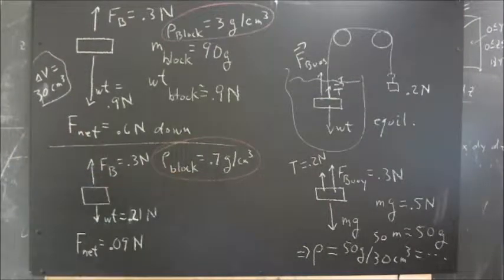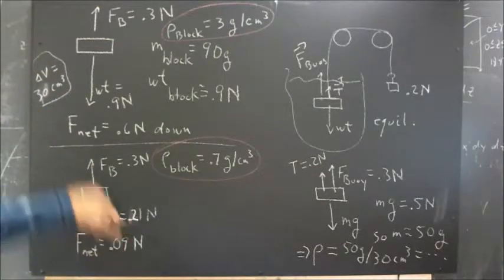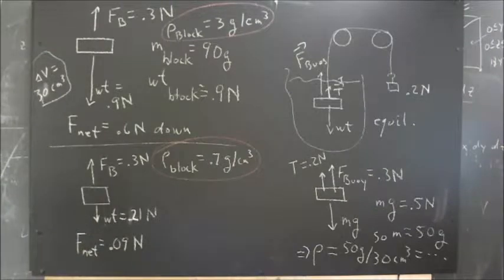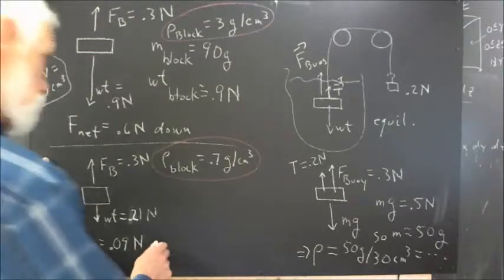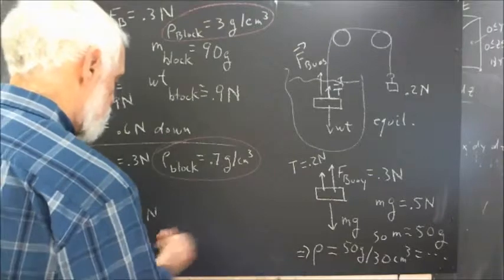Now, if the density is 0.7 grams per cubic centimeter, then the diagram looks like this. You've got 0.3 newtons up. You can verify that it's 0.21 newtons down. And net force is 0.09 newtons, and I didn't write downward. And it isn't downward, it's upward.